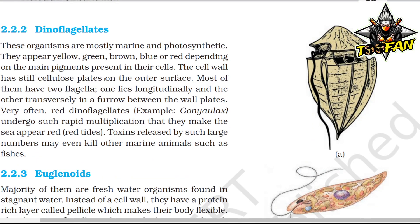Dinoflagellates: These organisms are mostly marine and photosynthetic. They appear yellow, green, brown, blue, or red depending on the main pigments present in their cells. The cell wall has stiff cellulose plates on the outer surface. Most have two flagella — one lies longitudinally and the other transversely in a furrow between the wall plates. Very often, red dinoflagellates undergo such rapid multiplication that they make the sea appear red — called red tides. Toxins released by such large numbers may even kill other marine animals such as fishes.